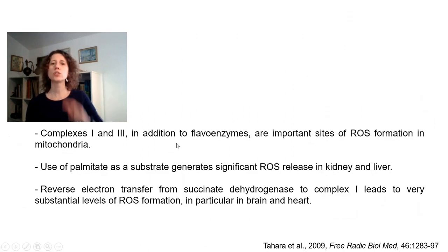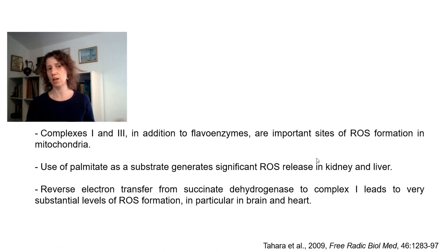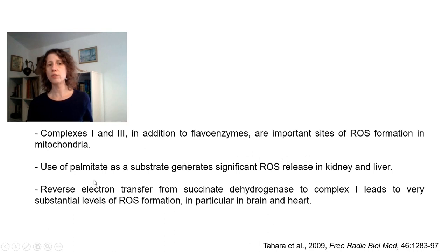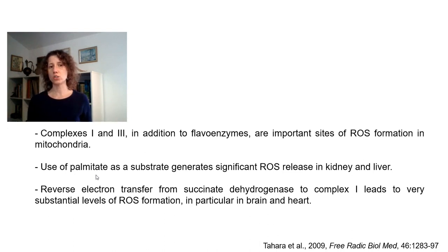In addition to this first conclusion strengthening the importance of flavo enzymes, another finding was that palmitate — a fatty acid — is an important source of oxidants in some tissues, specifically in kidney and liver. Liver has a lot of fatty acid oxidation, and the reason is that flavo enzymes in fatty acid metabolism can themselves be responsible for generating oxidants. Pamela Kakimoto's work from my lab characterized very long chain acyl-CoA dehydrogenase, which metabolizes palmitate in mitochondria, as a source of oxidants.